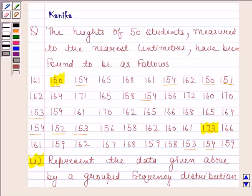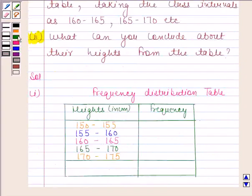Values covered within the interval 150 to 155 are 150, 154, 154, 150, 151, 154, 153, 154, 152, 153, 153, 154. So, frequency of the class 150 to 155 is 12.